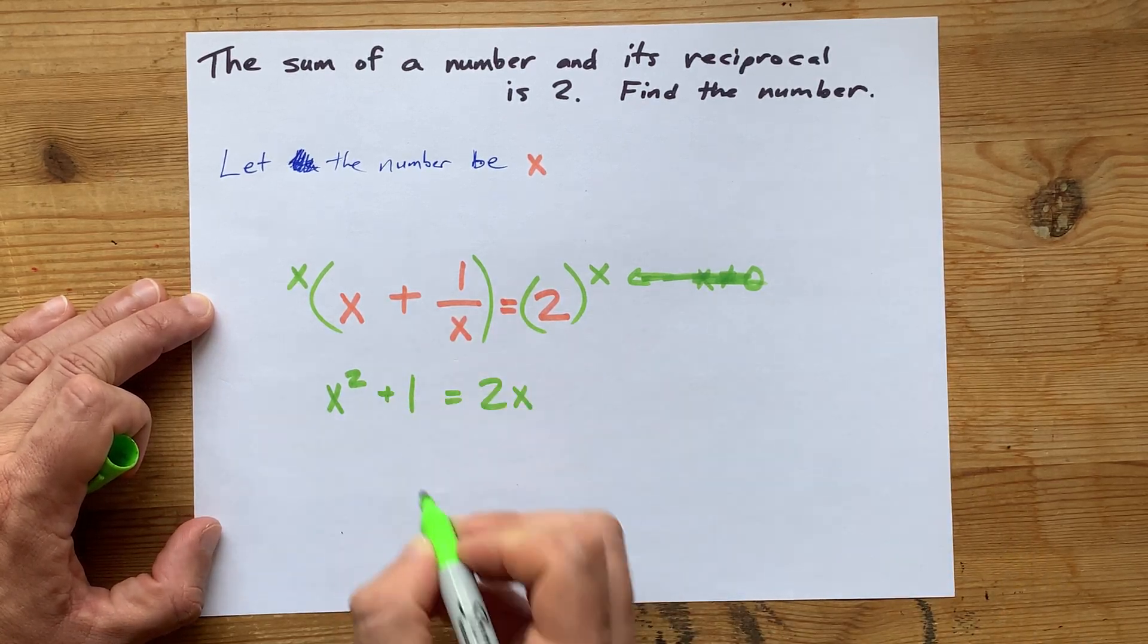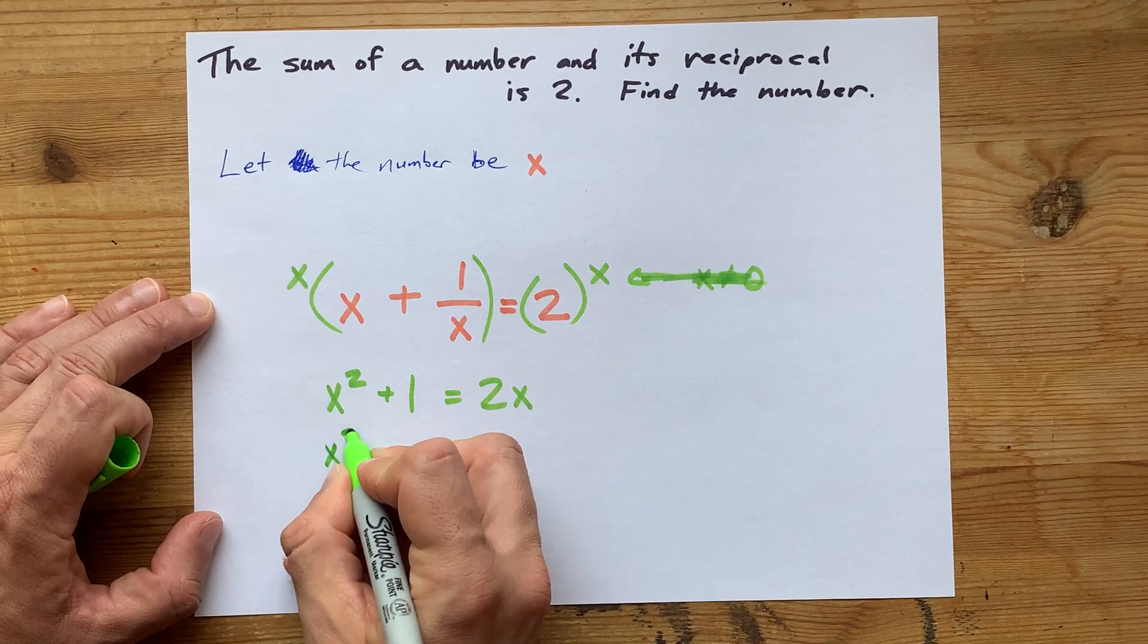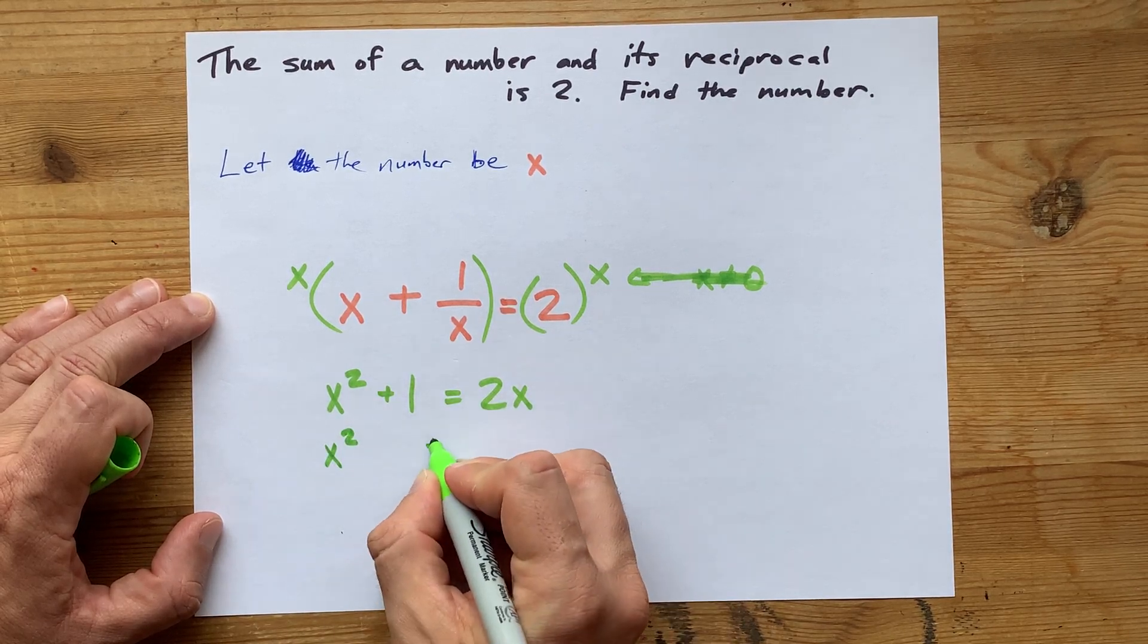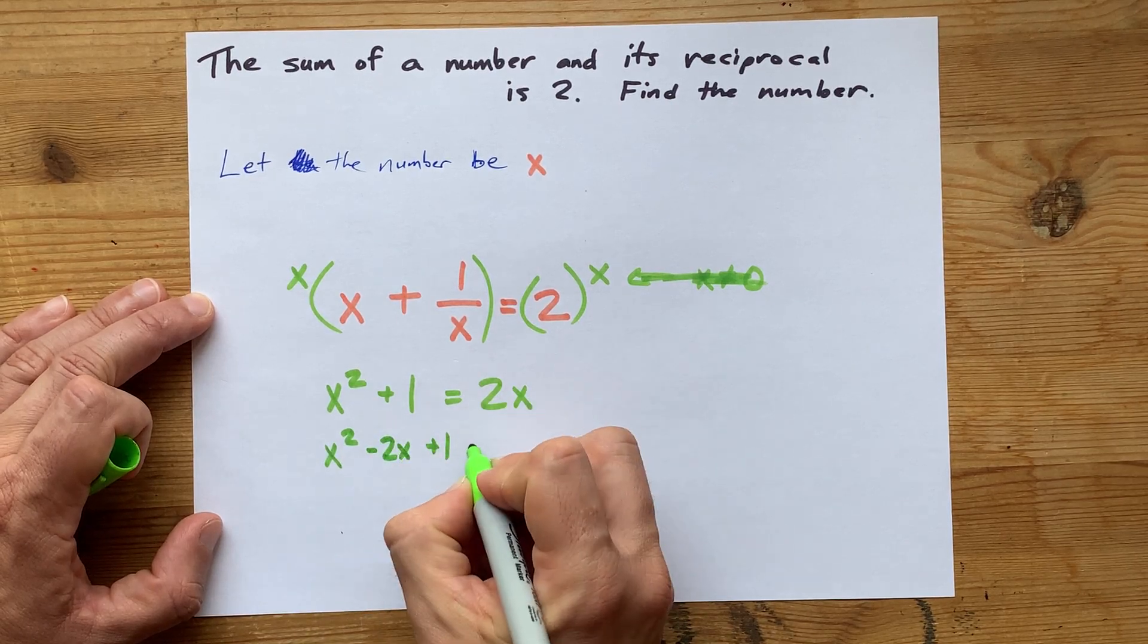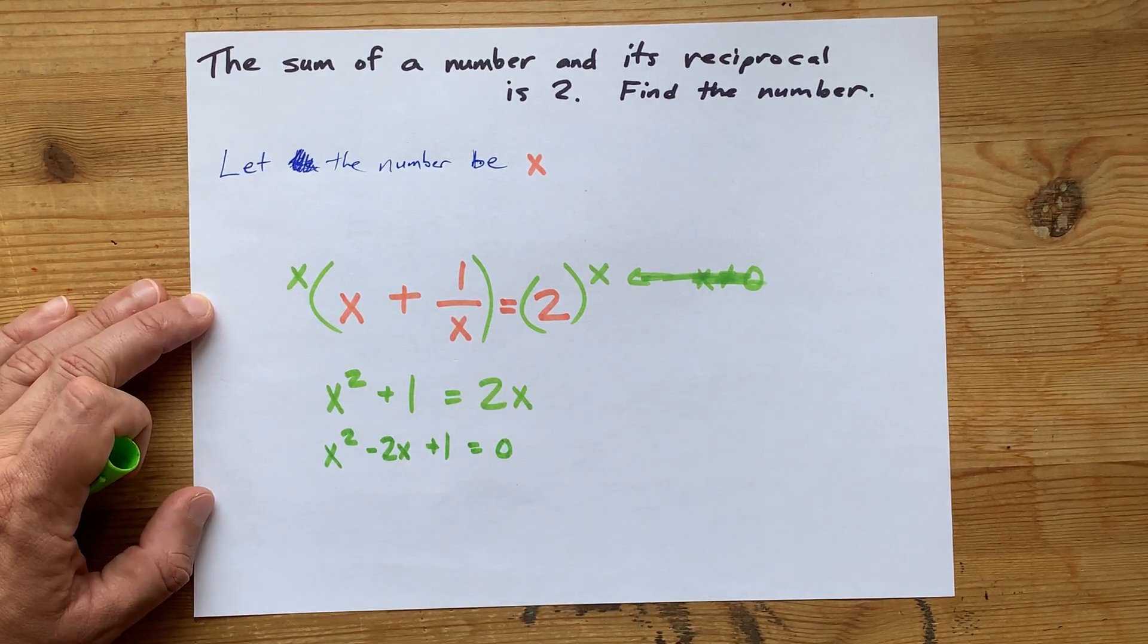I'm going to move the 2x to the left-hand side here. We've still got our x squared. We've still got our plus 1. 2x on the other side becomes minus 2x, and I'm left with 0 on my right-hand side.